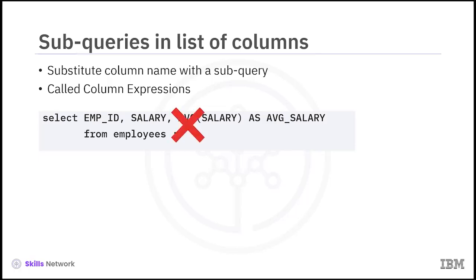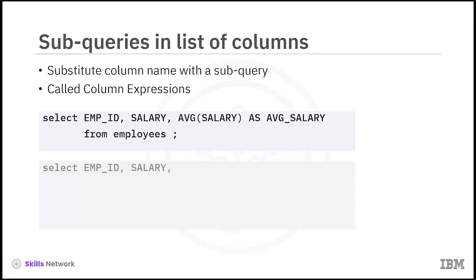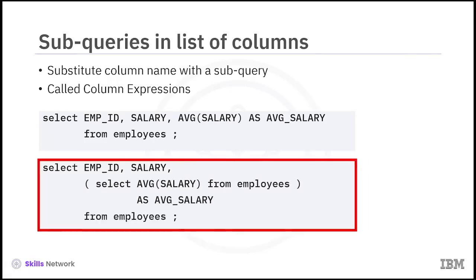Running this query will result in an error indicating that no GROUP BY clause is specified. We can circumvent this error by using the average function in a subquery placed in the list of columns. For example: SELECT employee_ID, salary, (SELECT AVG(salary) FROM employees) AS average_salary FROM employees.